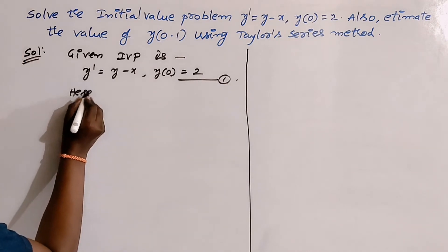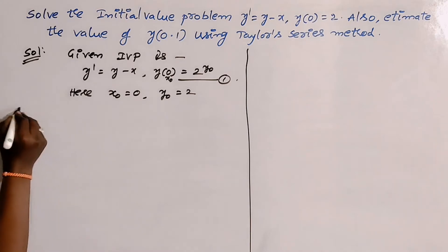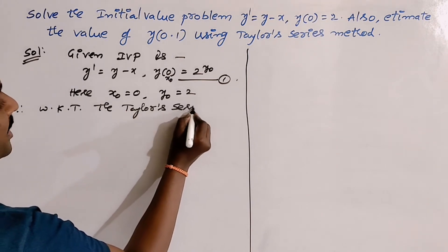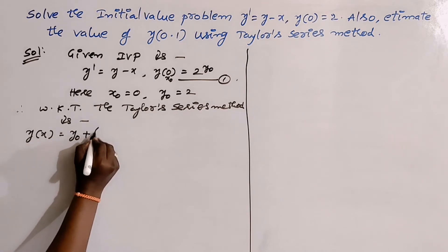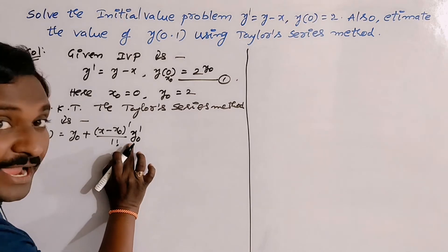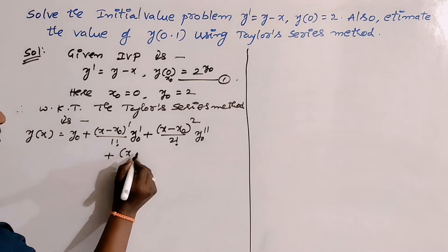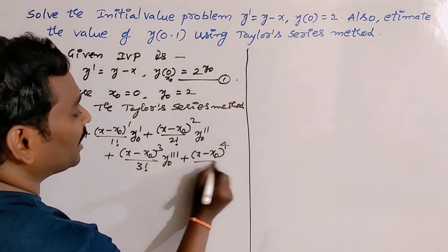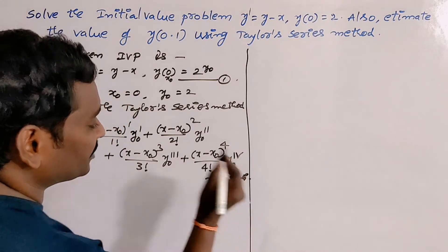Here x₀ = 0 and y₀ = 2. The Taylor series method gives: y(x) = y₀ + (x - x₀)/1! · y₀' + (x - x₀)²/2! · y₀'' + (x - x₀)³/3! · y₀''' + (x - x₀)⁴/4! · y₀'''' and so on up to infinity. Take this as equation A.